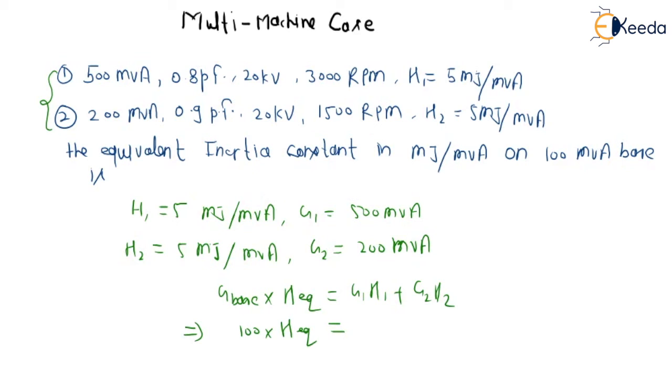So G1 is 500 times 5 plus G2 equals 200 times 5. So from here clearly we can see that the value of H equivalent is equal to 35 megajoule per MVA.